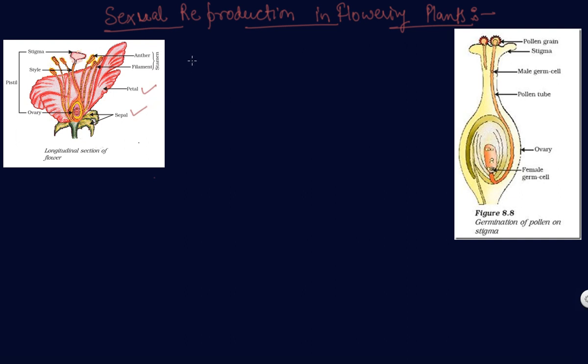The flower may be unisexual, like examples are papaya and watermelon.